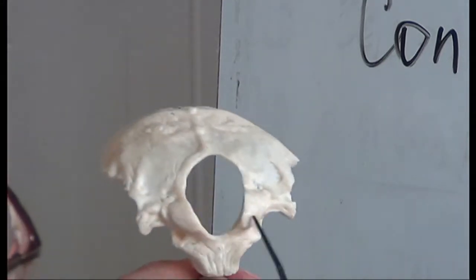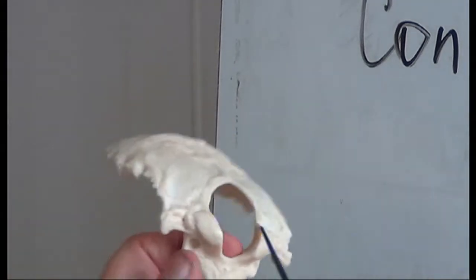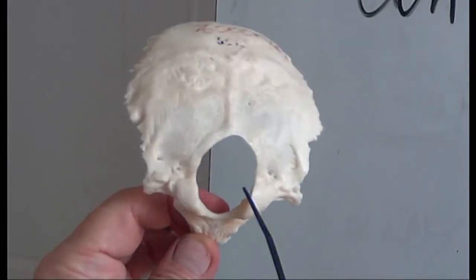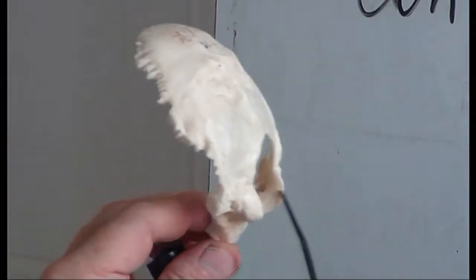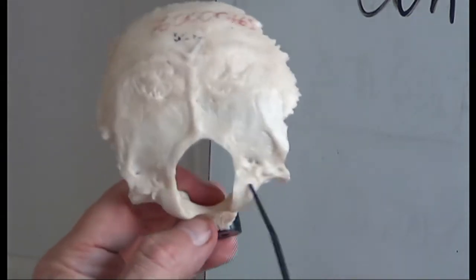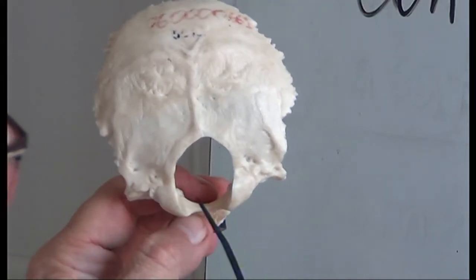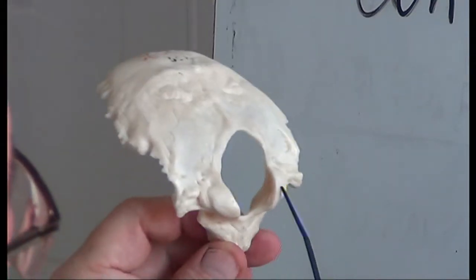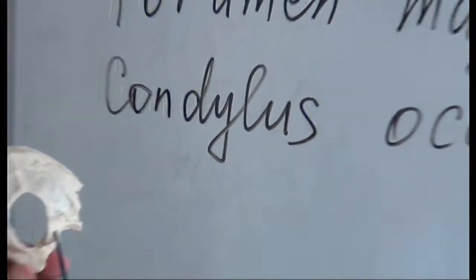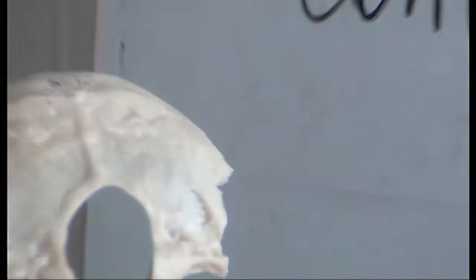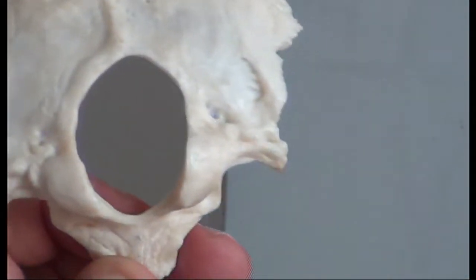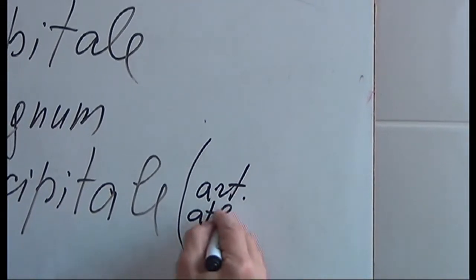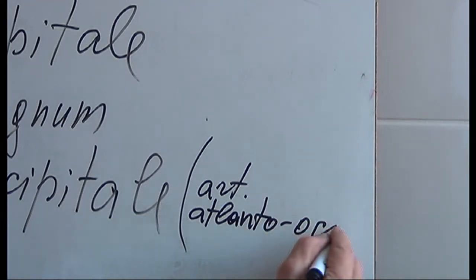They are part of the articulation — articulatio atlanto-occipitalis. So the condylus occipitalis is part of the joint articulatio atlanto-occipitalis.